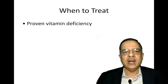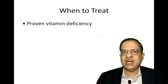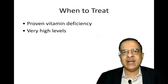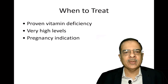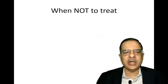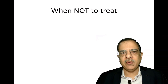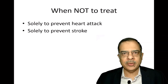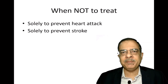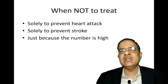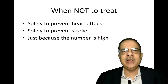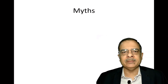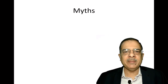When to treat: when there is a proven vitamin deficiency, treat that deficiency. If levels are very high, say more than 100, treat it. In pregnancy, if there is recurrent fetal loss and homocysteine levels are high, we should treat. When not to treat: solely to prevent heart attack or stroke — no guidelines recommend this as a preventive measure — and not just because the numbers are high, like 18, 20, or 25.